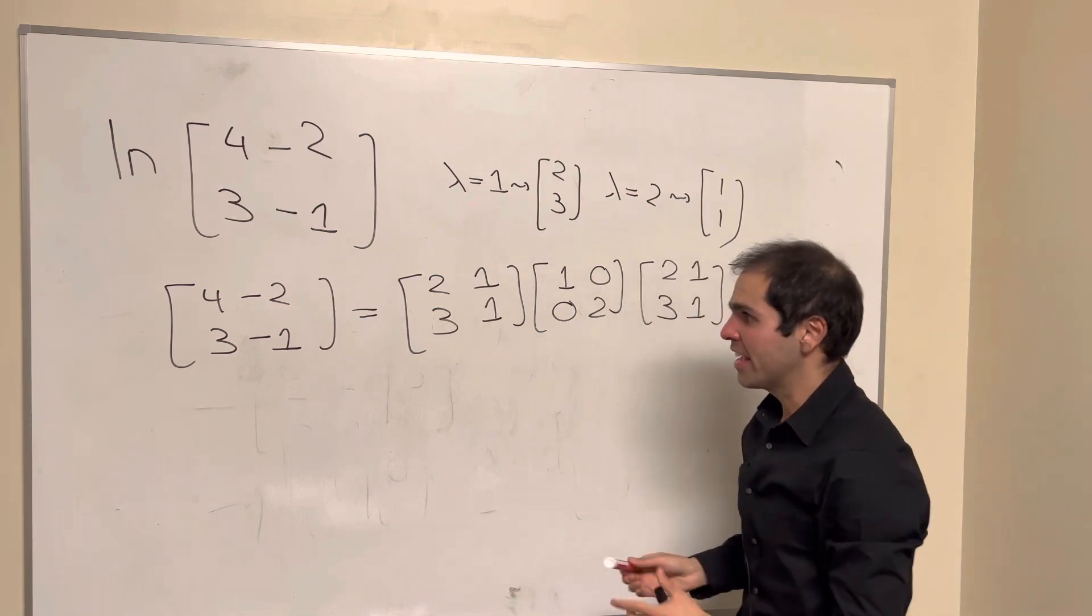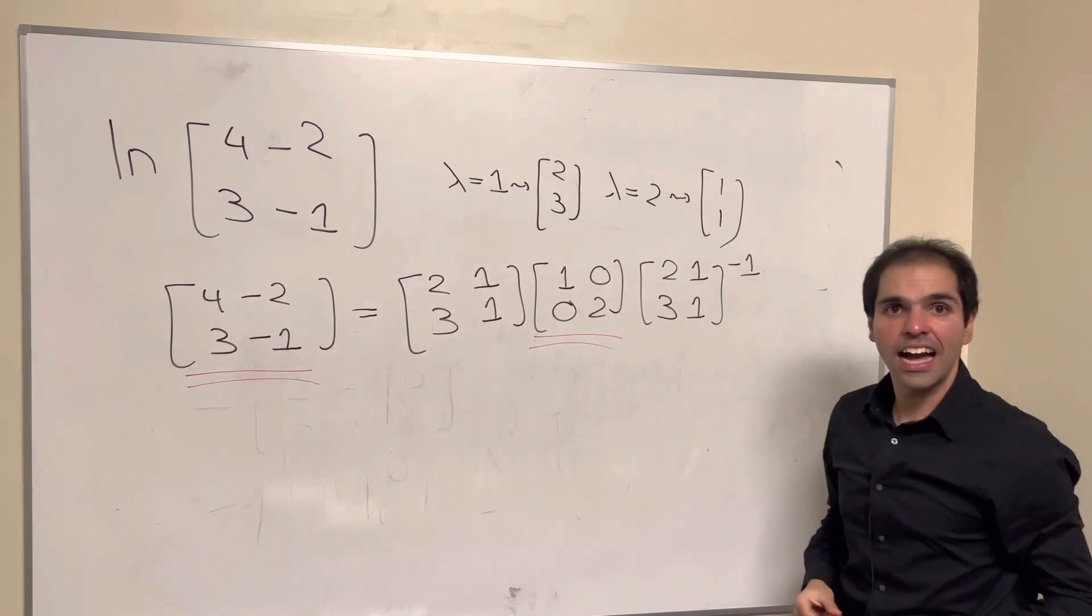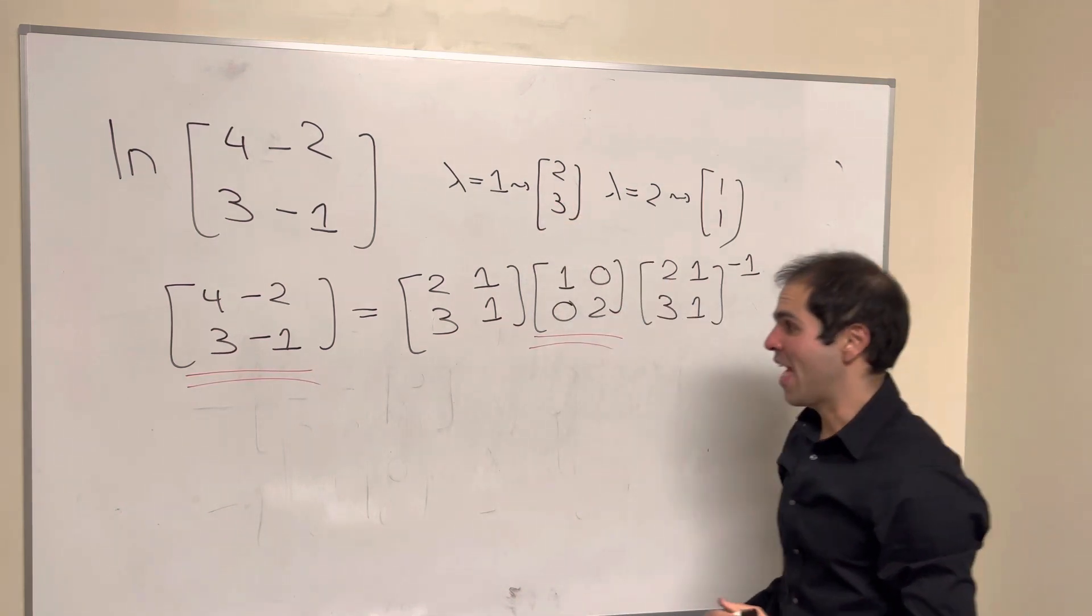Now here's the cool thing. Whatever you do to this matrix, essentially you just do to the diagonal part, which is also true for ln.